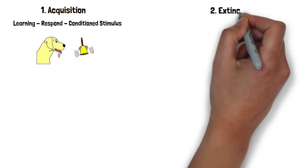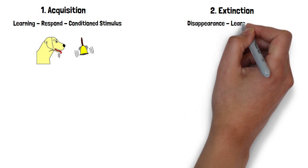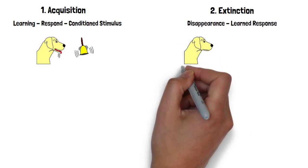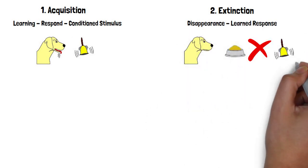2. Extinction, disappearance of learned response. This happens when a conditioned stimulus is no longer paired with an original stimulus.